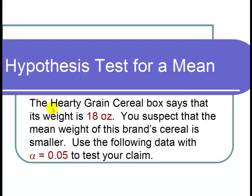This is a video on a hypothesis test for a mean. The question states that the Hardy Grain cereal box says that its weight is 18 ounces. You suspect that the mean weight of this brand of cereal is smaller. Use the following data with alpha equals 0.05 to test your claim.